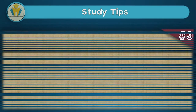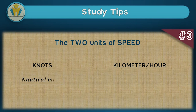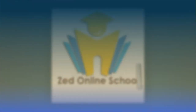Last but not least, you should know the two units of speed: knots and kilometers per hour. Knots are used when you find your speed using distance in nautical miles, while kilometers per hour is used when you find your speed using distance in kilometers. So remember that when the radius in the question is given in nautical miles, your speed will be in knots, not kilometers per hour. Thanks for reaching the end of this video — go find some questions and leave comments about any difficulties you encounter.